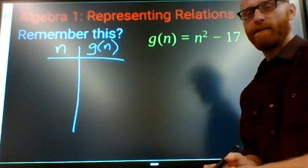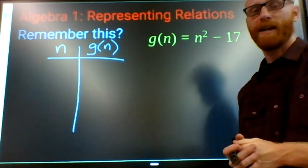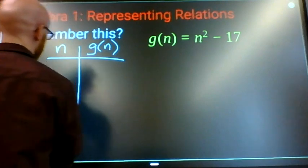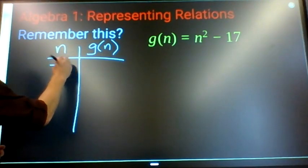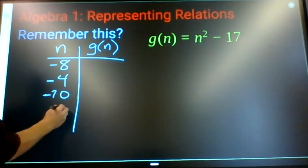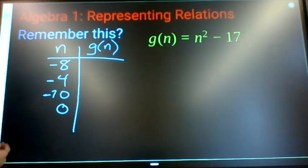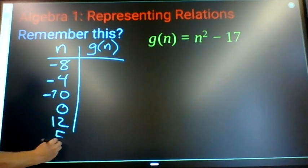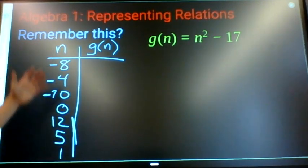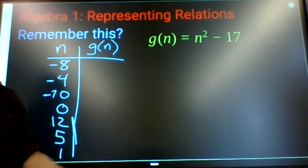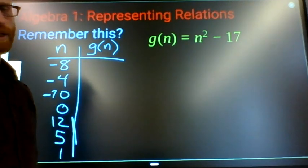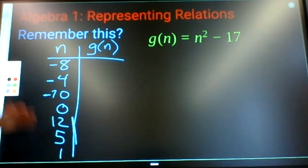I'm gonna say I want you to choose seven different n values, and I want three of them to be negative, three of them to be positive, one of them to be zero. So you choose your values: n is negative 8, n is negative 4, n is negative 10, n is zero, n is 12, n is 5, n is 1. Where did these numbers come from? I chose them. You'll choose them. Did I have to choose these numbers? No, I could choose any numbers to start my table.